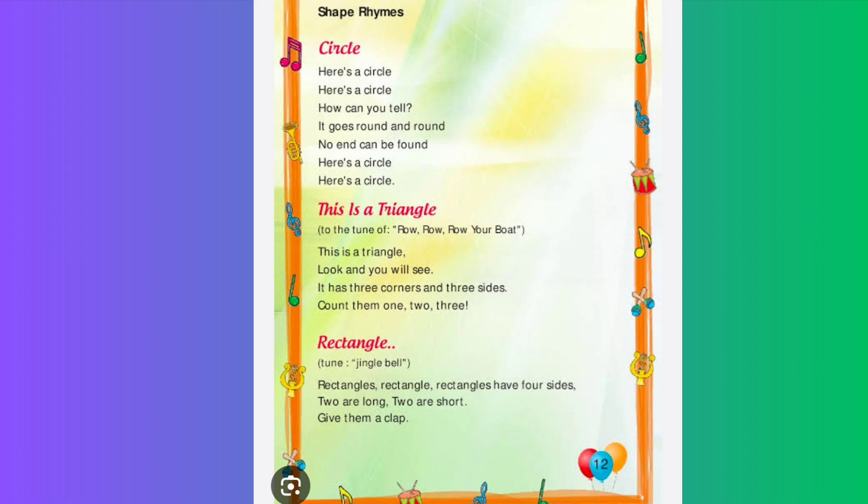This is a triangle, this is a triangle, look and you will see. It has three corners and three sides — count them: one, two, three.